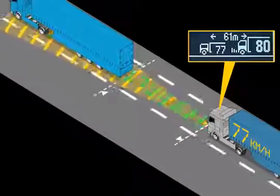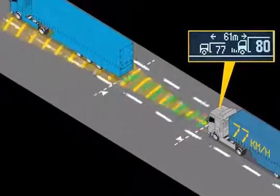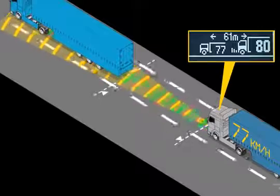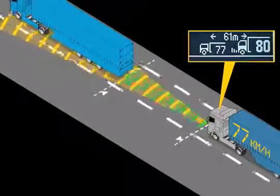If there's no vehicle in front, or if a vehicle that is in front leaves the lane, the ACC system accelerates to the set speed and keeps this speed constant.